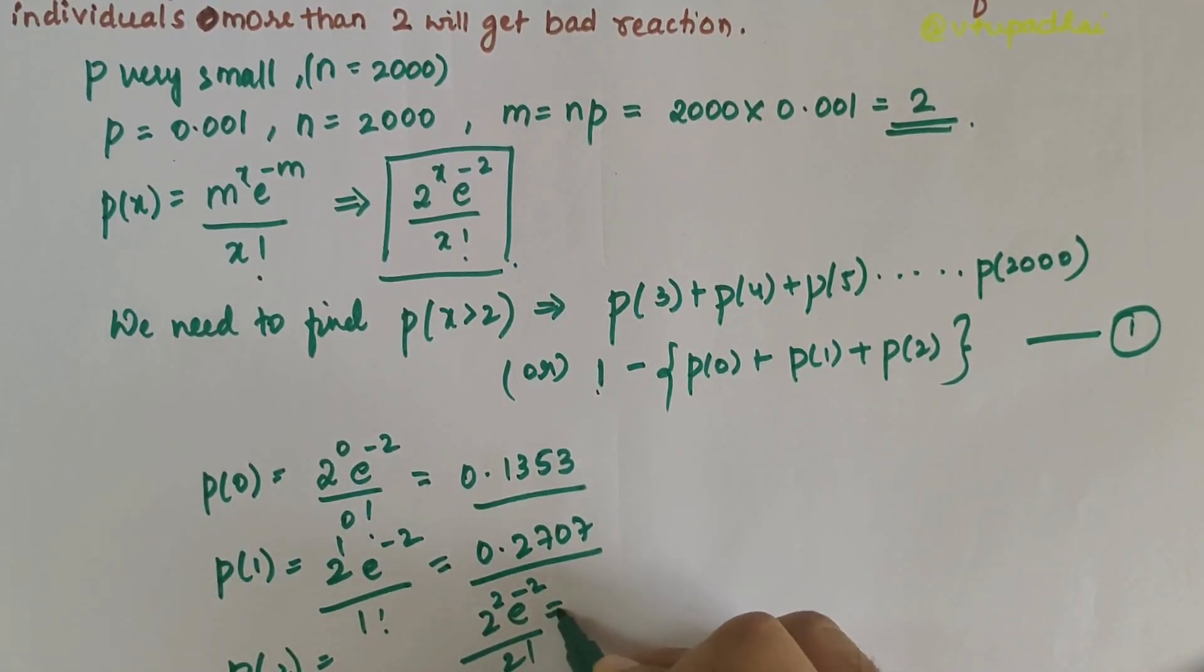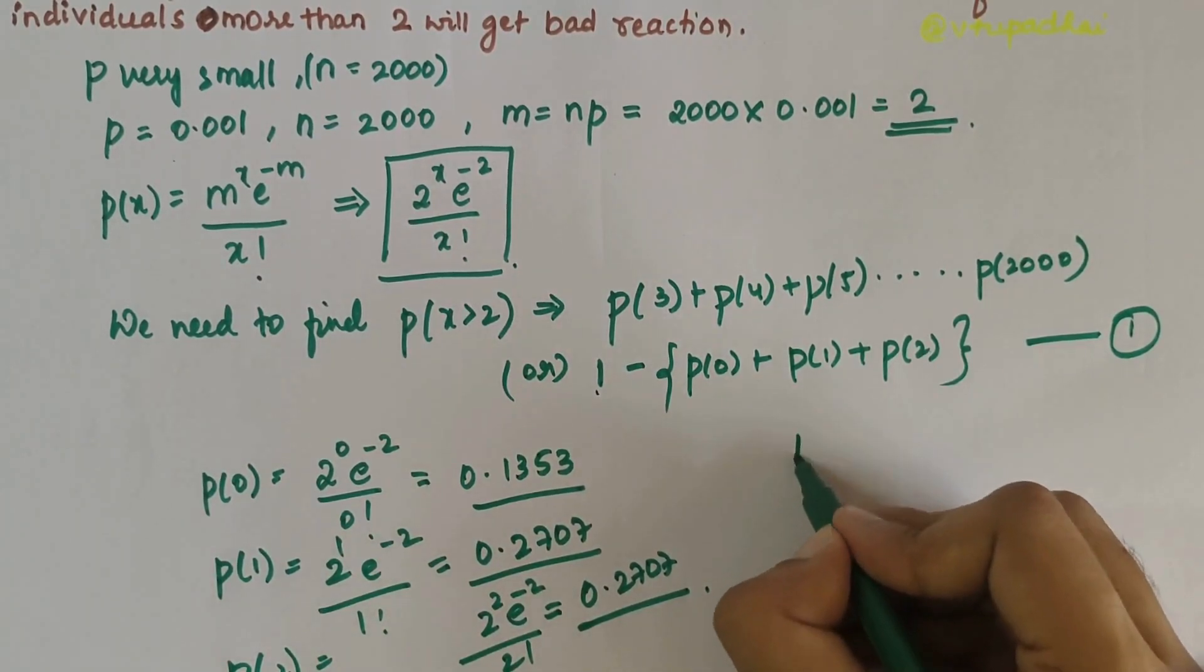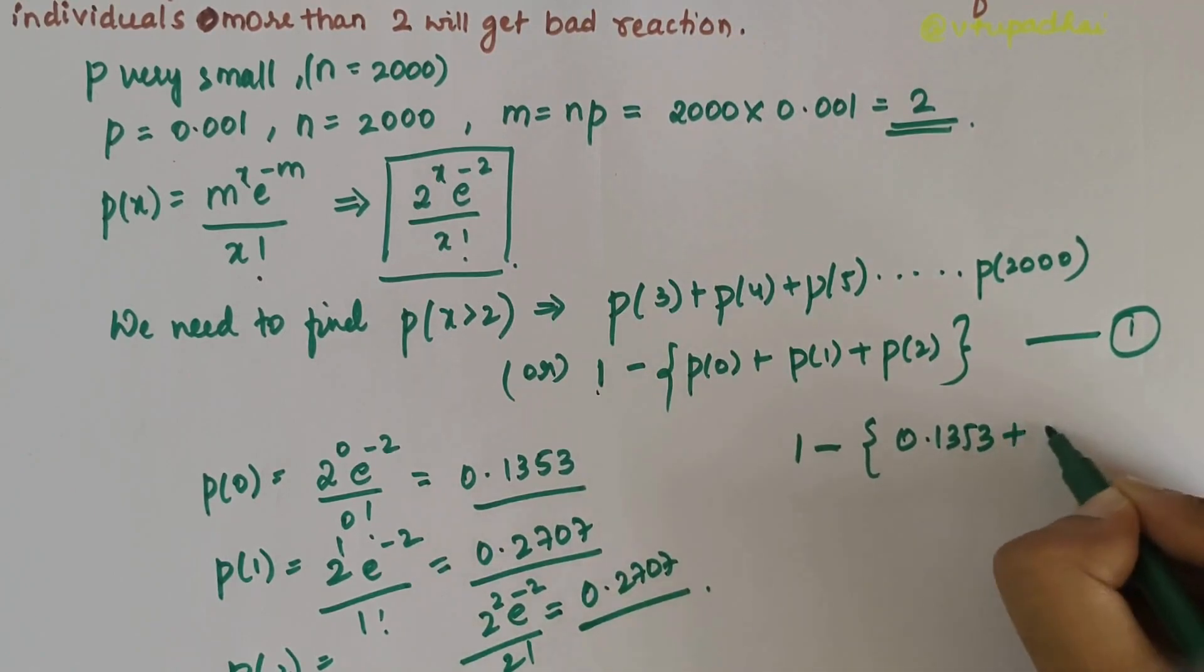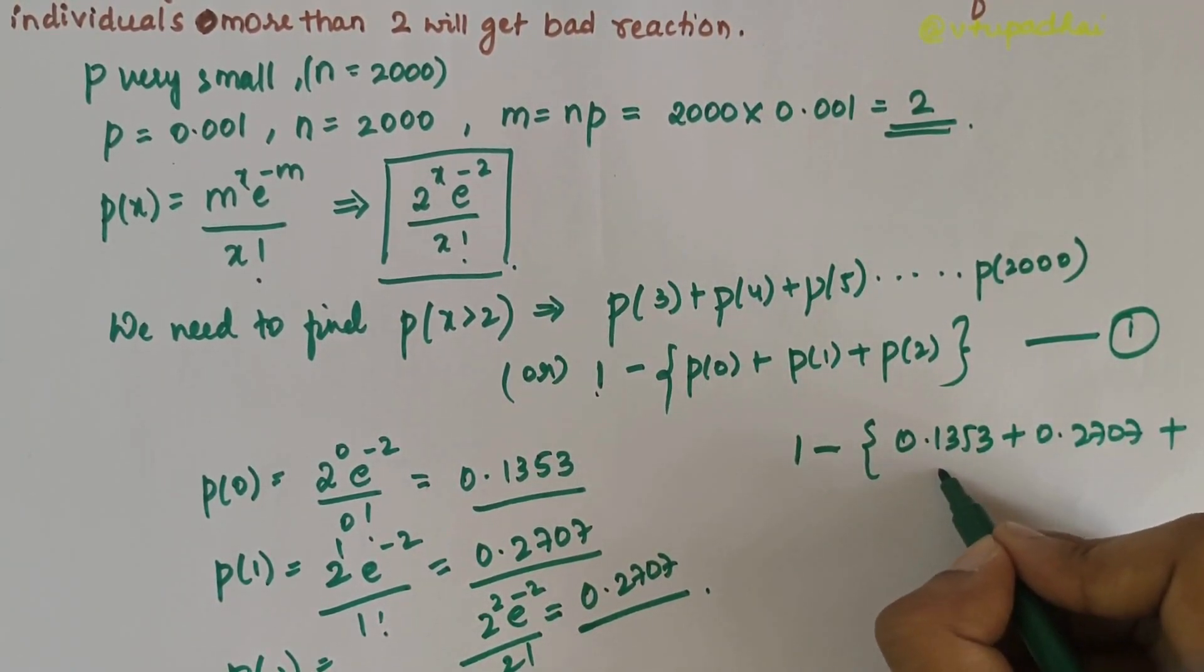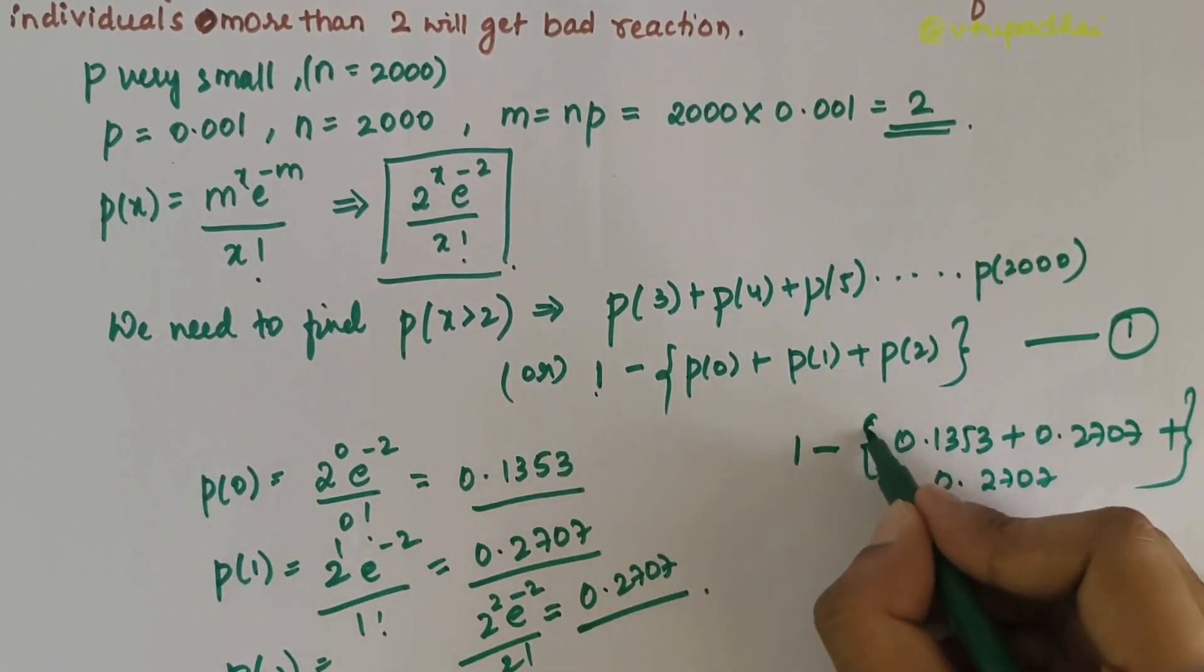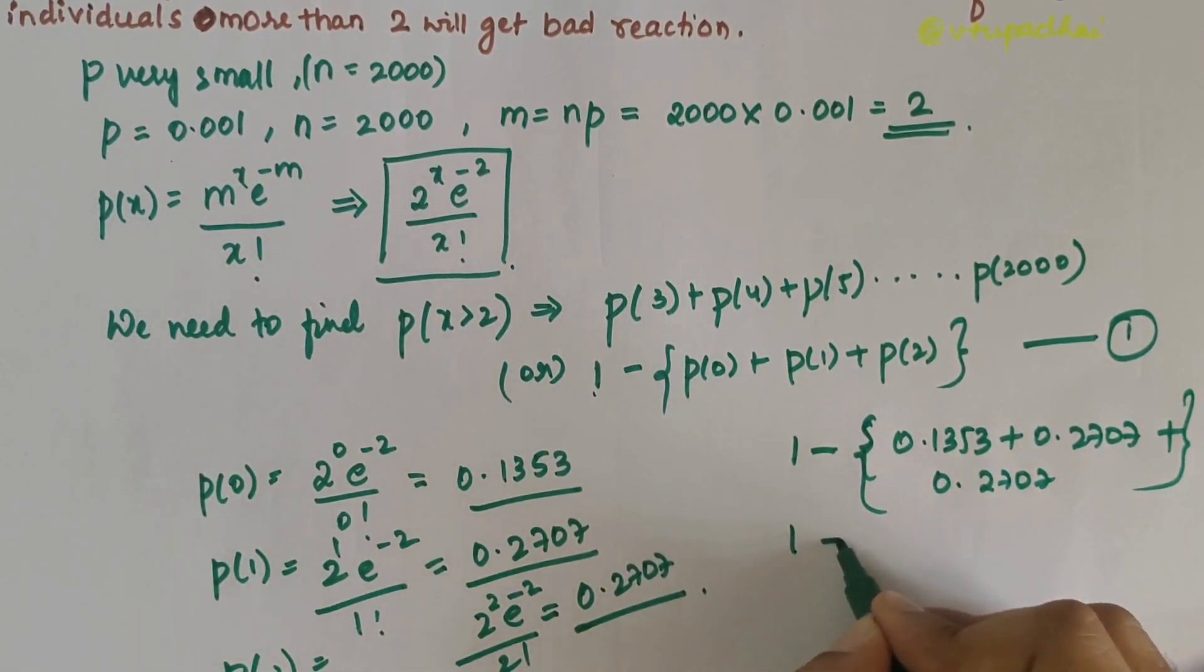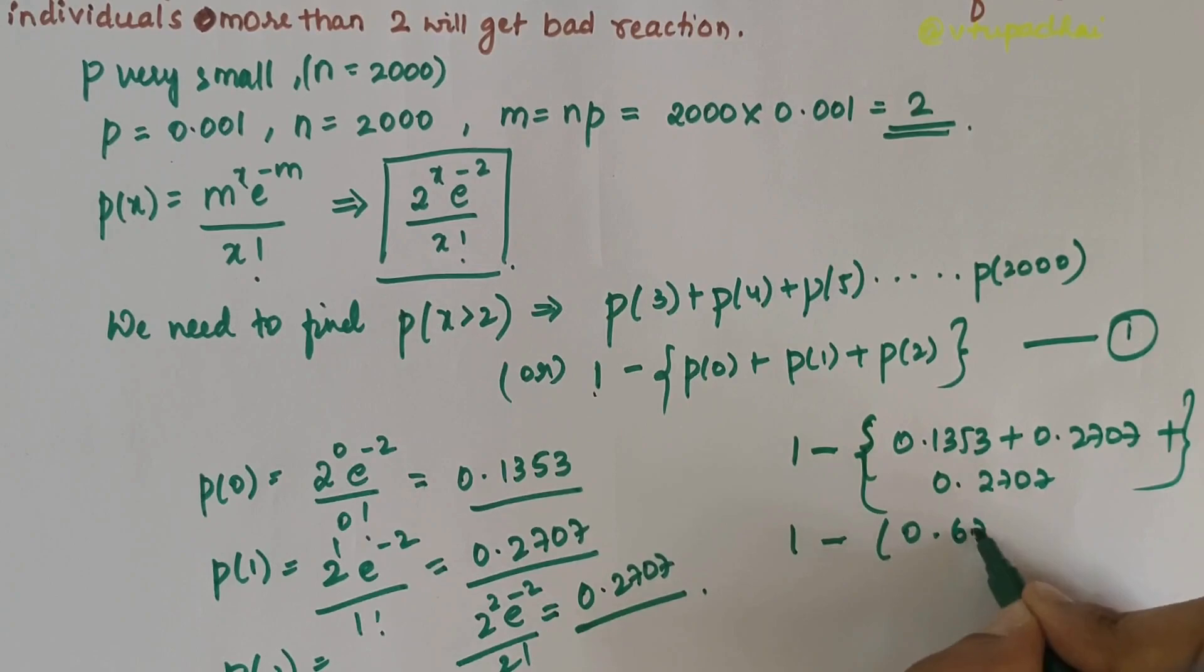Now we calculate: 1 - (0.1353 + 0.2707 + 0.2707) = 1 - 0.6767 = 0.3233. So 0.3233 is the final answer.